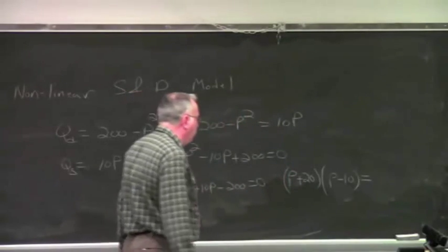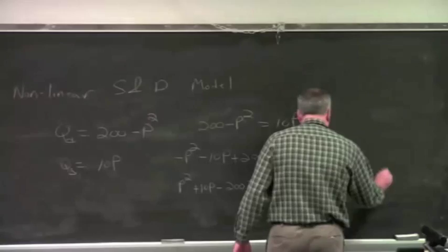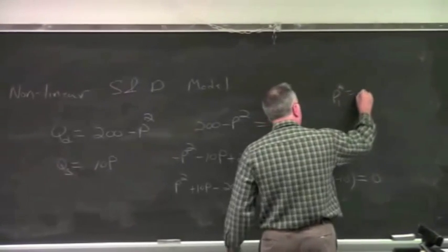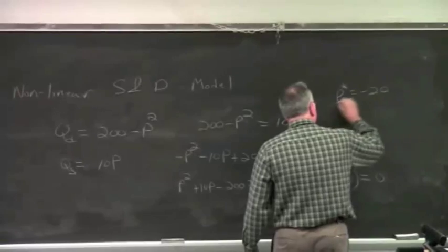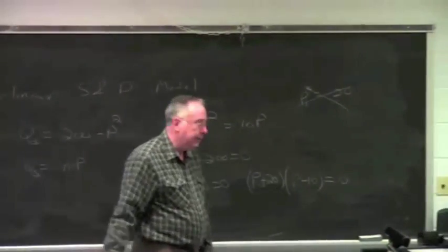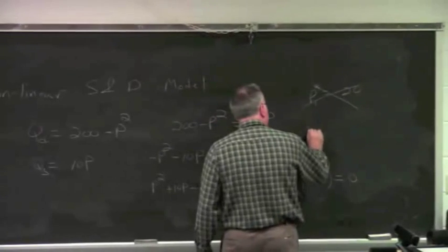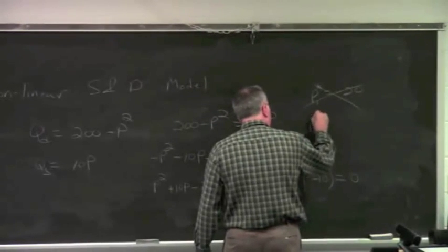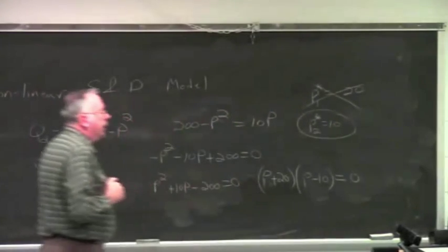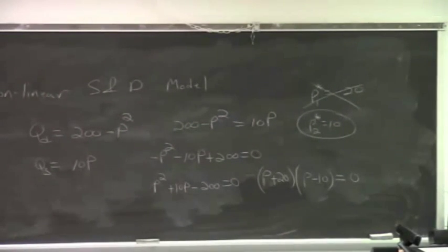So the two roots are P1 star equals minus 20. We'll cross this one out, because it's a negative price. That wouldn't make sense in an economic context. The other one does make sense, though. P2 star equals 10. And that is the solution we're looking for. That's this solution right here.